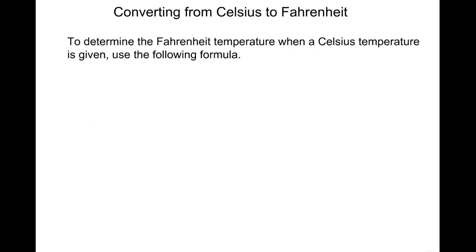Converting from Celsius to Fahrenheit. To determine the Fahrenheit temperature when a Celsius temperature is given, use the following formula: the degrees Fahrenheit is 9/5 times the degrees in Celsius plus 32.